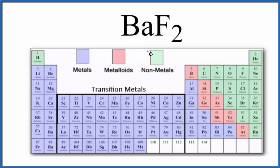So the first way is we can look at the periodic table divided into metals, metalloids, and nonmetals. So barium is right here, it's a metal, and fluorine over here, it's a nonmetal.